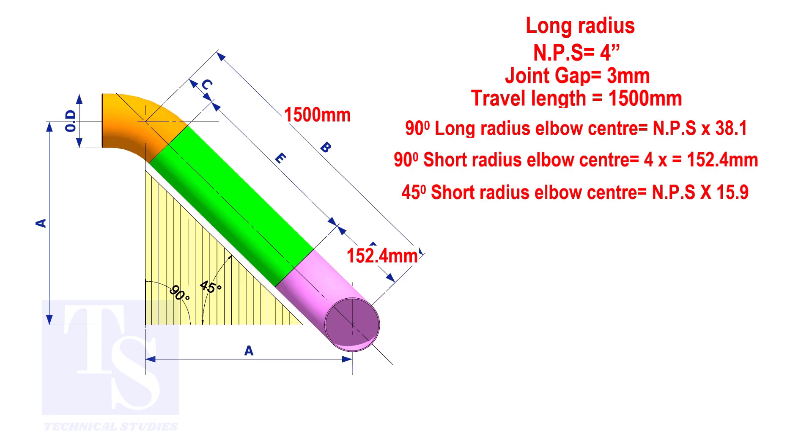To calculate the elbow center of a 45 degree long radius elbow, multiply the nominal pipe size by 15.9. The answer is 63.6 millimeters.